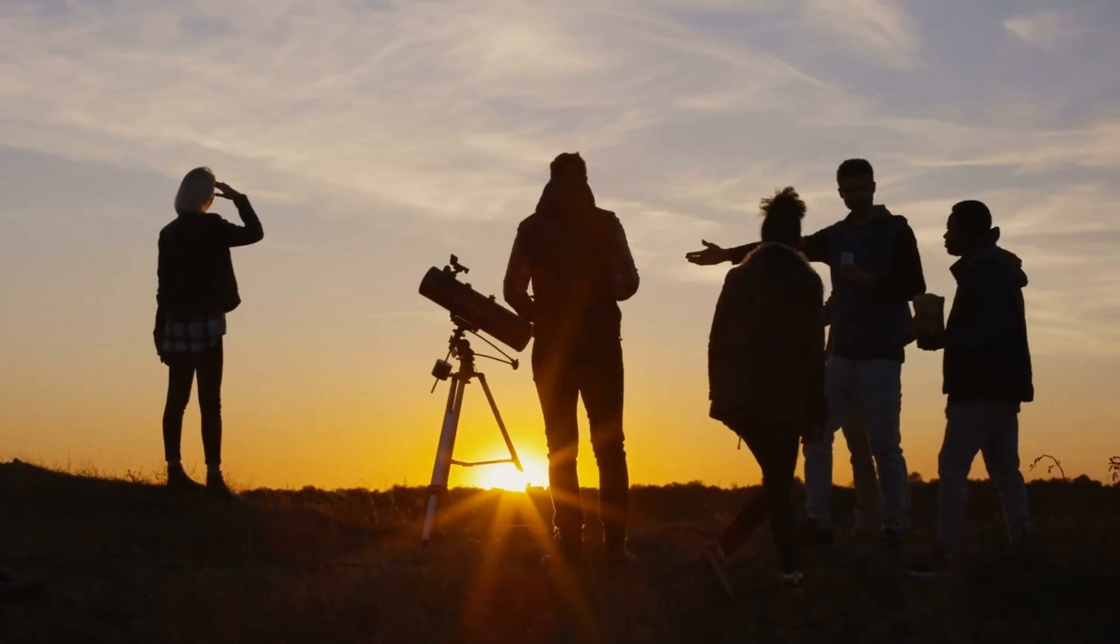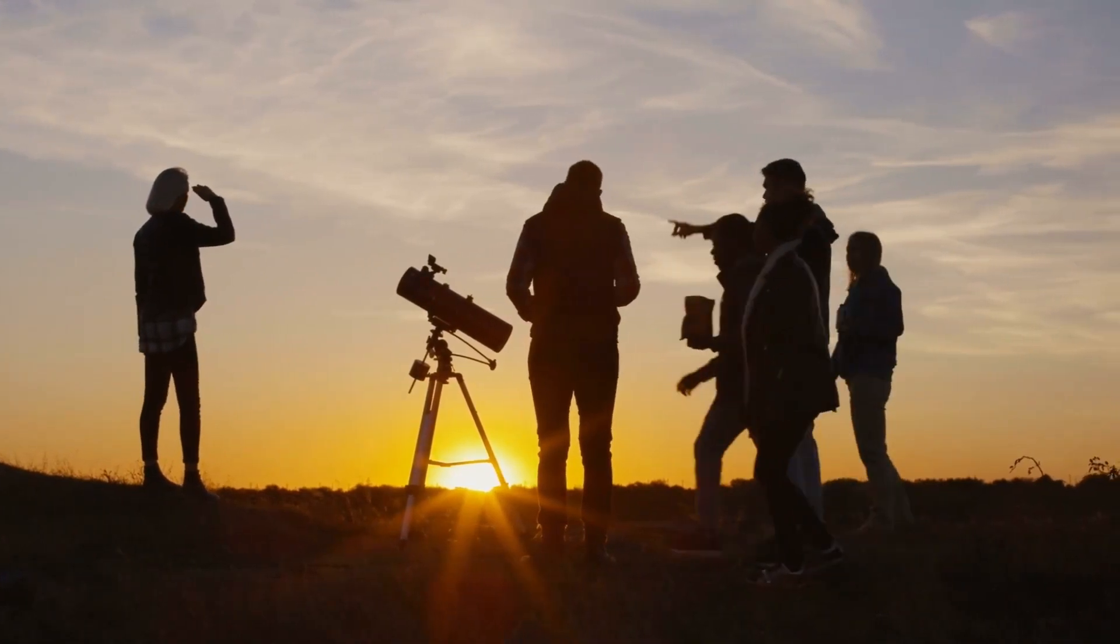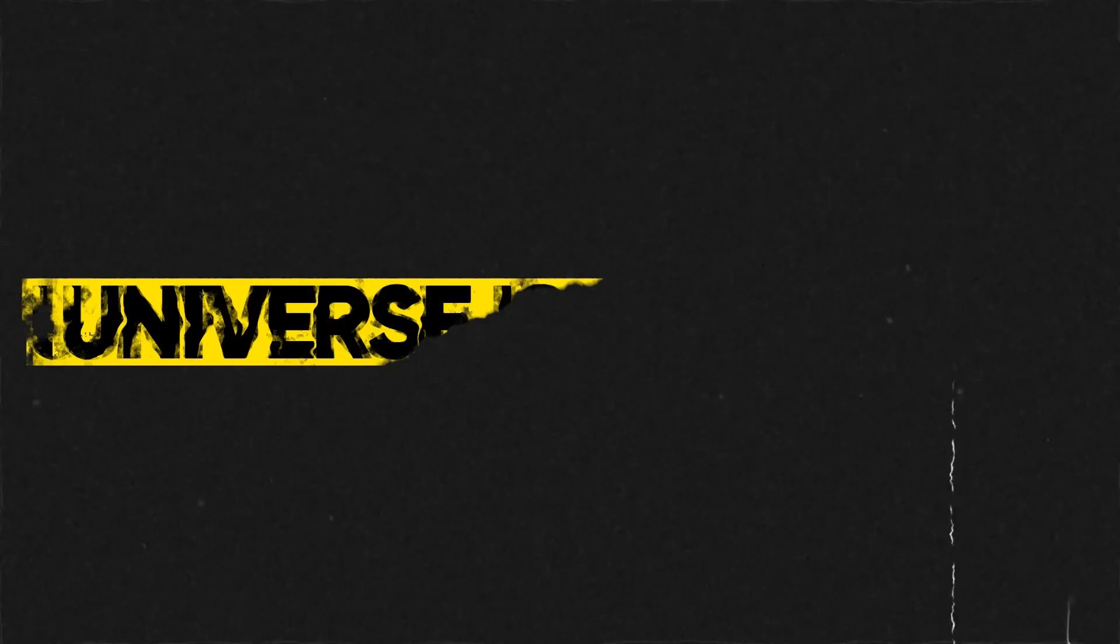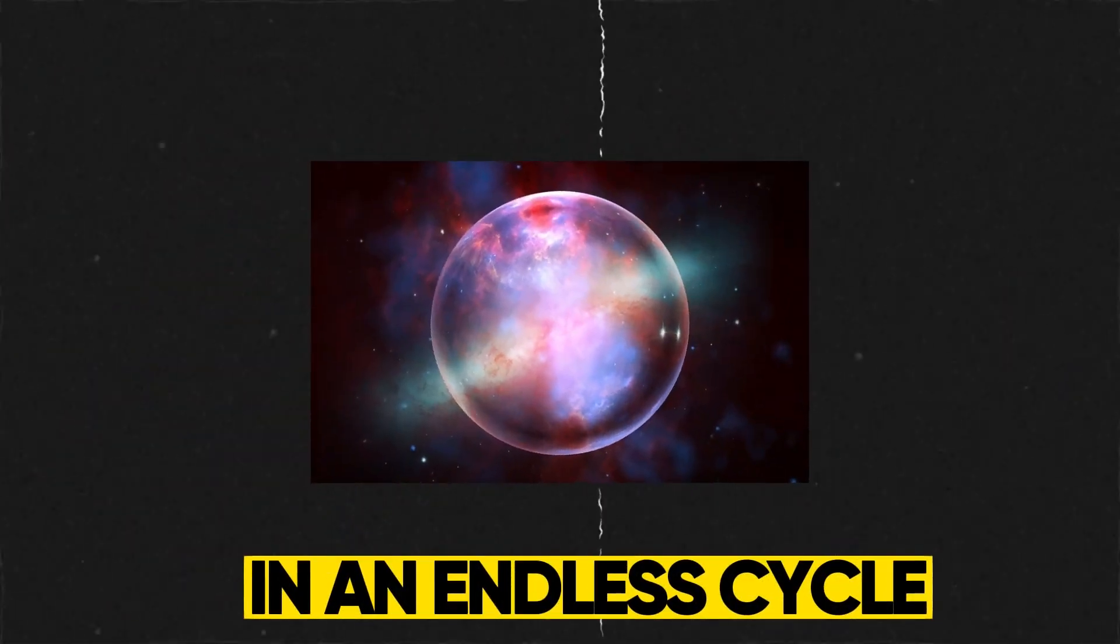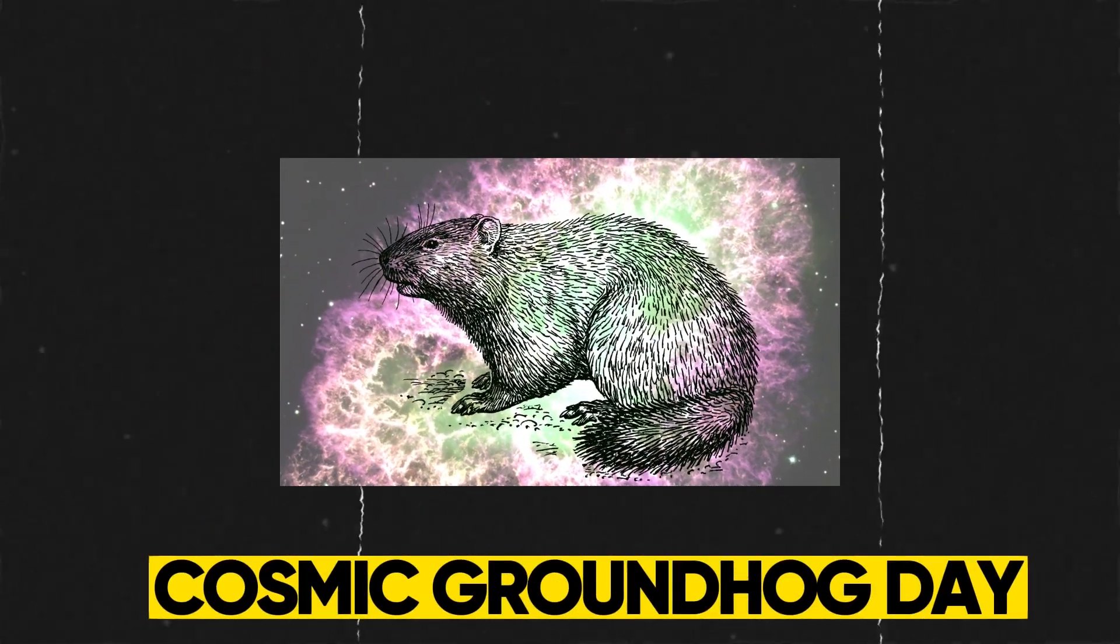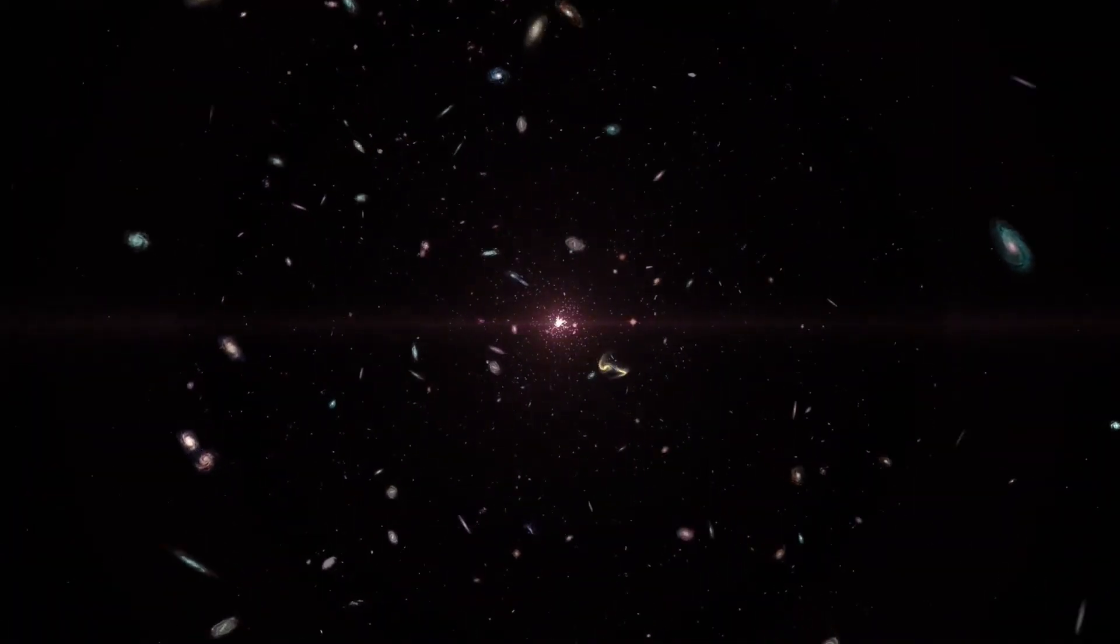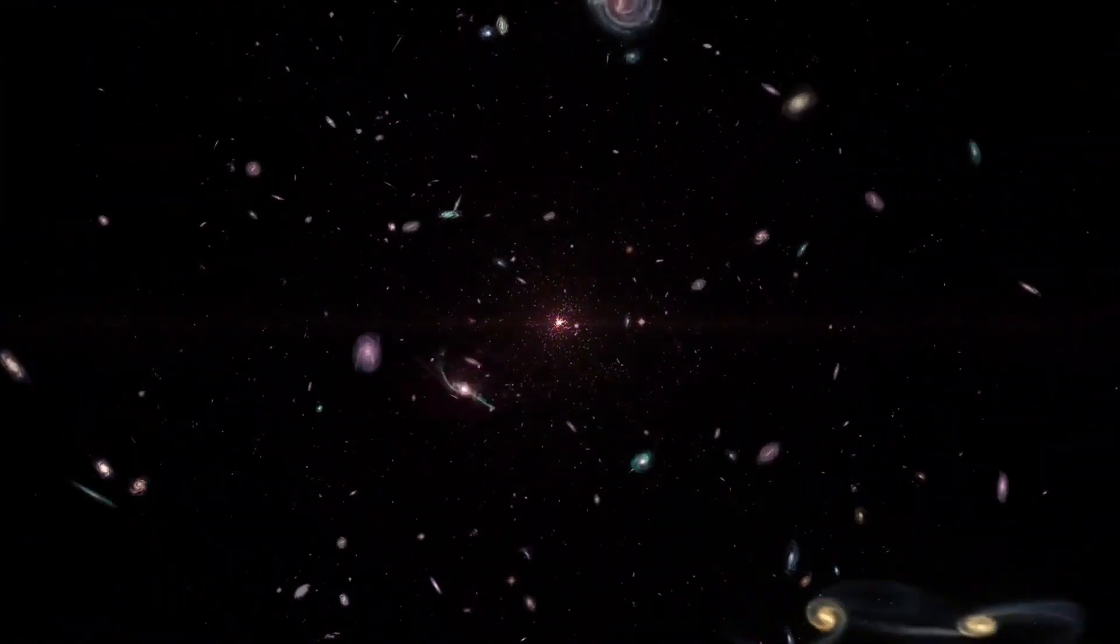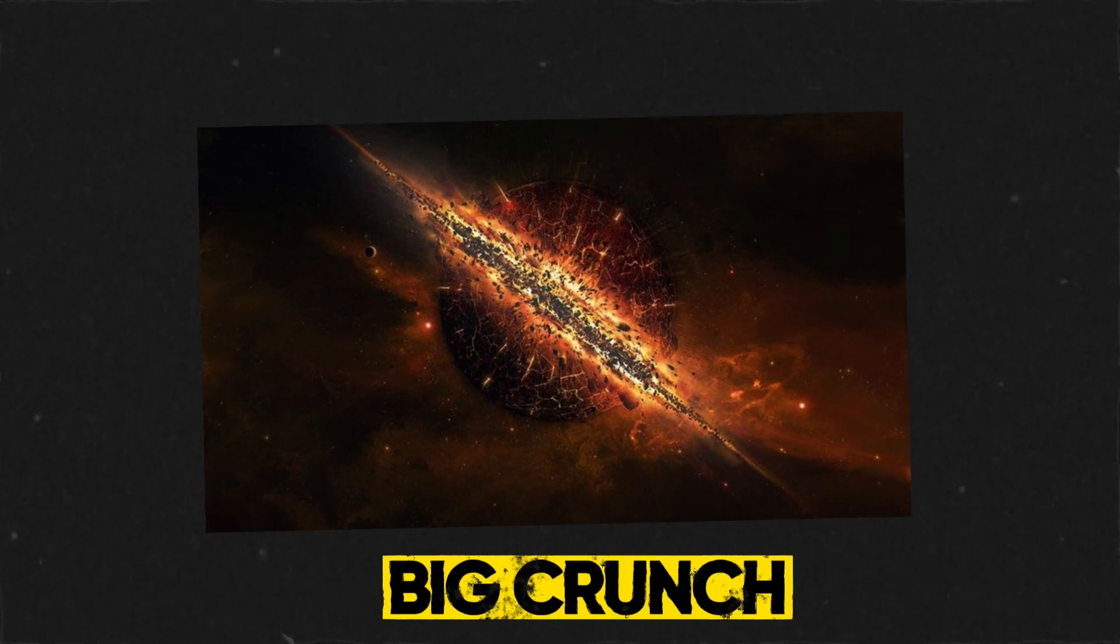It's a question that has kept many astronomers and cosmologists up at night. One of the most intriguing theories out there suggests that the universe is caught in an endless cycle, like a cosmic Groundhog Day. The universe might be destroyed and reborn over and over again, in an eternal loop of creation and destruction. And if that's not enough to make your head spin, get ready for the Big Crunch.